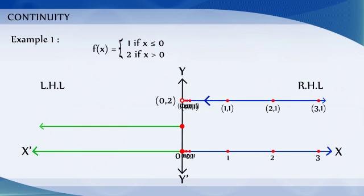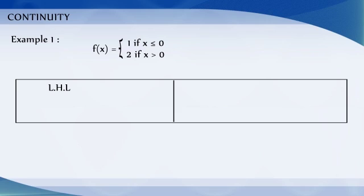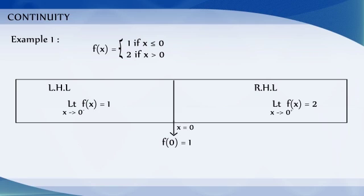That is, the left hand limit of the function f at 0 is 1 and the right hand limit of the function f at 0 is 2, and the value of the function at 0 is 1. We observe that the left hand limits do not coincide, and the value of the function at x equal to 0 coincides with the left hand limit.